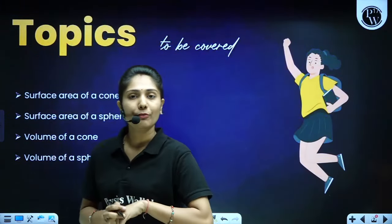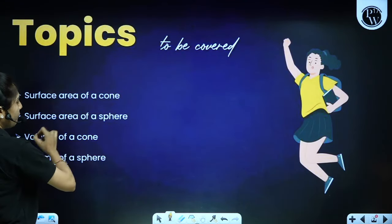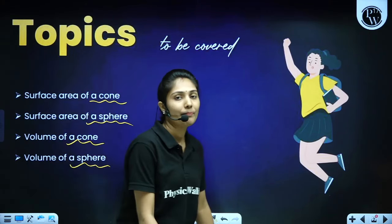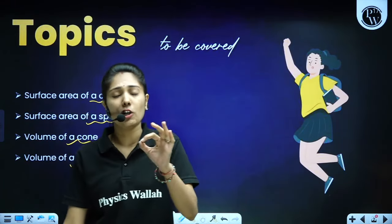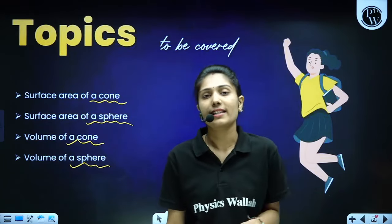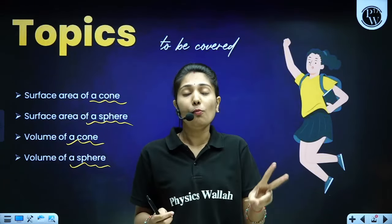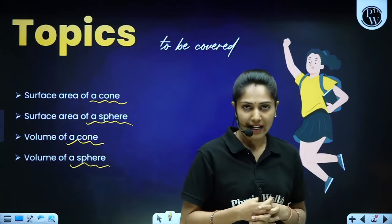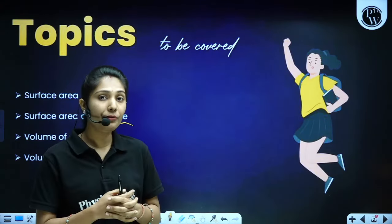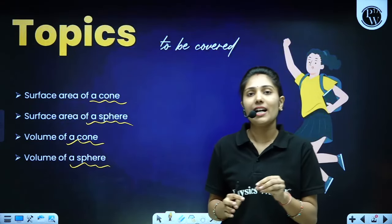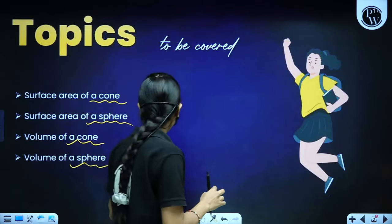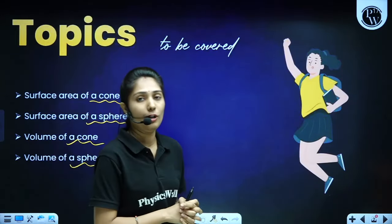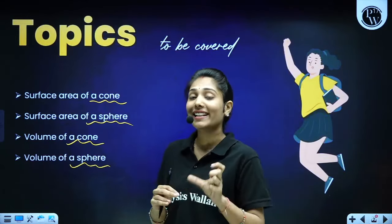The topics we will cover in this chapter are: surface area of cone, surface area of sphere, volume of cone, and volume of sphere. In class 8, you have already read total surface area, curved surface area, and volume of cube, cuboid, and cylinder. We will discuss these geometrical figures in detail in this chapter.